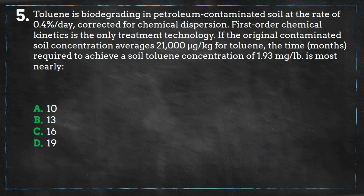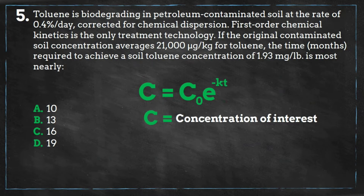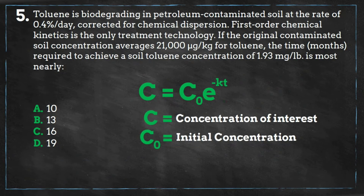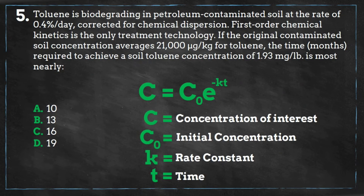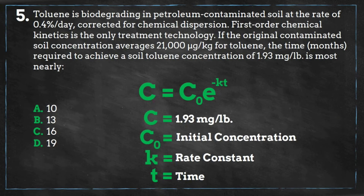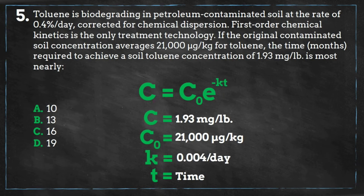So using this equation for first order reactions, let's plug in the information listed in the problem. C equals the concentration of interest, C-naught equals the initial concentration, K is the rate constant, and T equals time. Our unknown variable is T, which is the time.